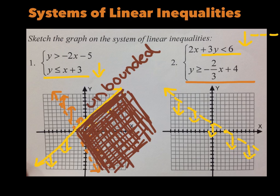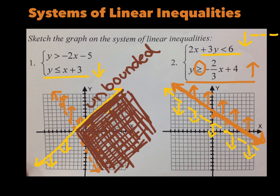The second line is in slope-intercept form: y-intercept is 4, slope is negative 2/3. Notice it is parallel to the other line. We want greater than or equal to, so it's a solid line — not dashed. Greater than goes up, so shade above this one. How can you shade the overlapping area if these lines are parallel? We want less than the first line and above the second. The answer is you can't — this is an example of no solution.